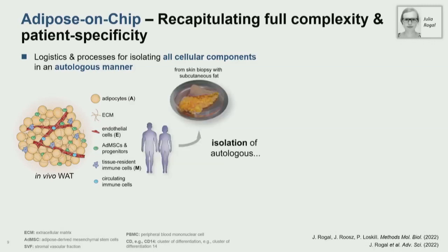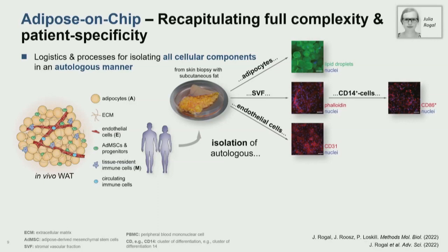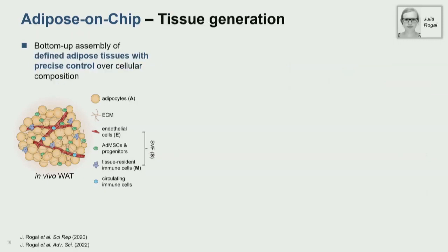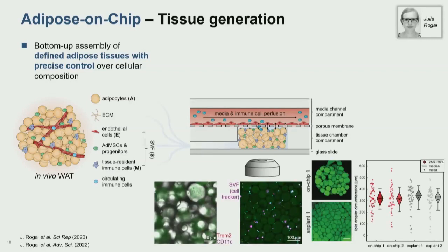For the model, we isolate from a tissue biopsy the adipocytes, the stromal vascular fraction where we can also get immune cells, and the endothelial cells. At the same time, we get blood from the same patient and isolate PBMCs and then the T cells or monocyte cells. When we have all these cells in isolated fractions, we put them back together using what we call a bottom-up assembly approach — injecting the adipocytes and immune cells into our chip's tissue compartment.